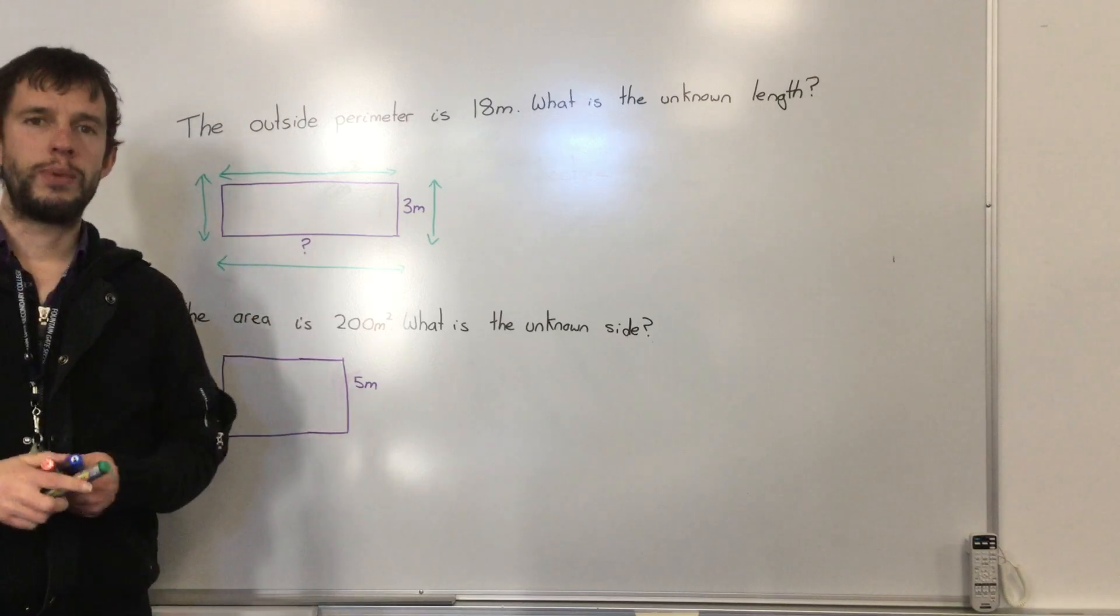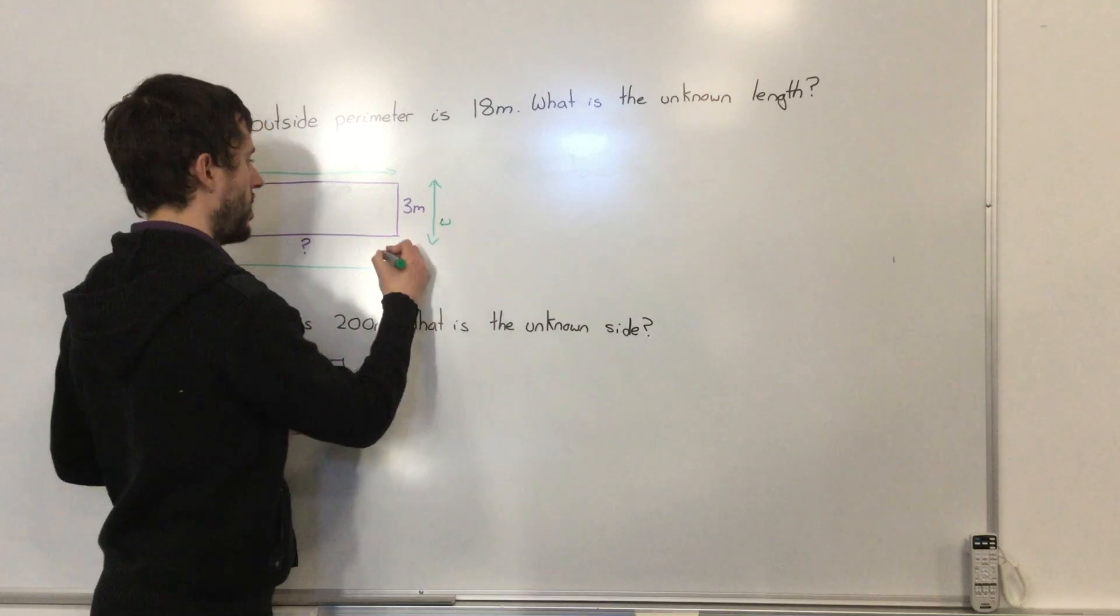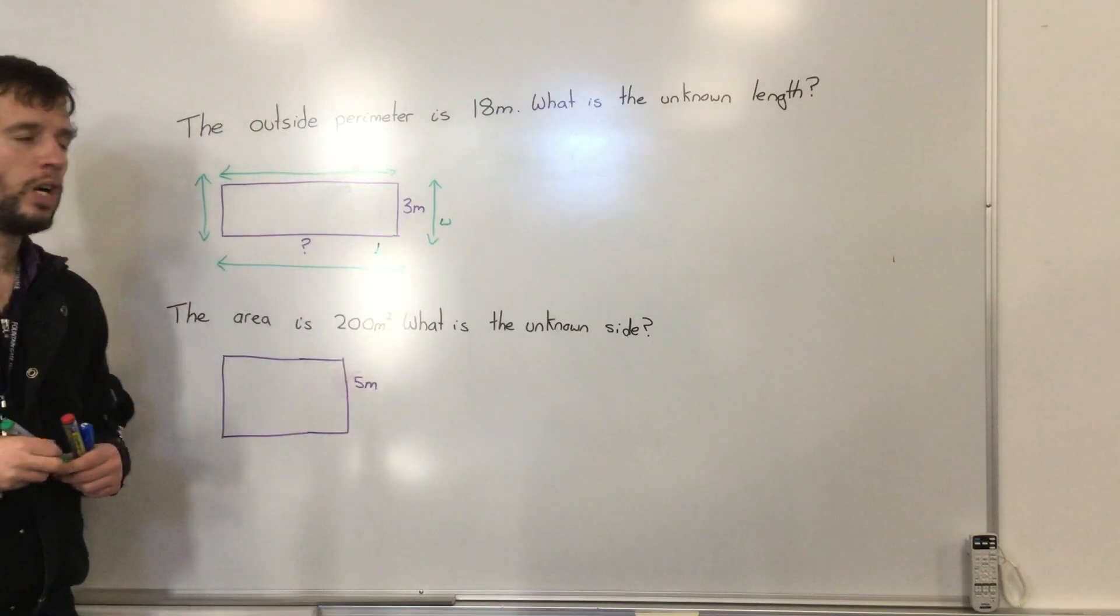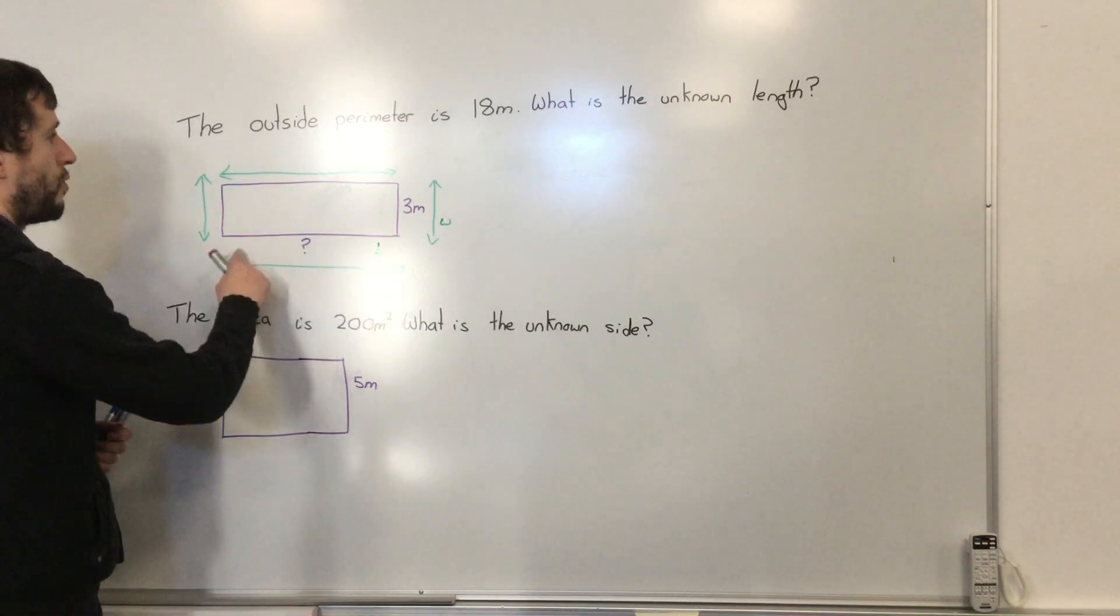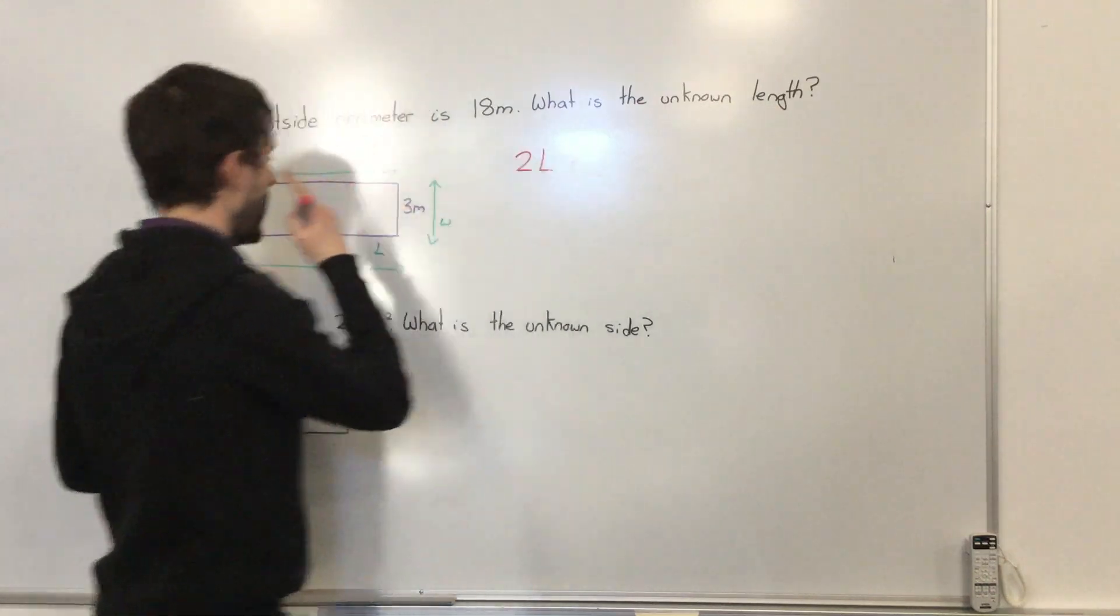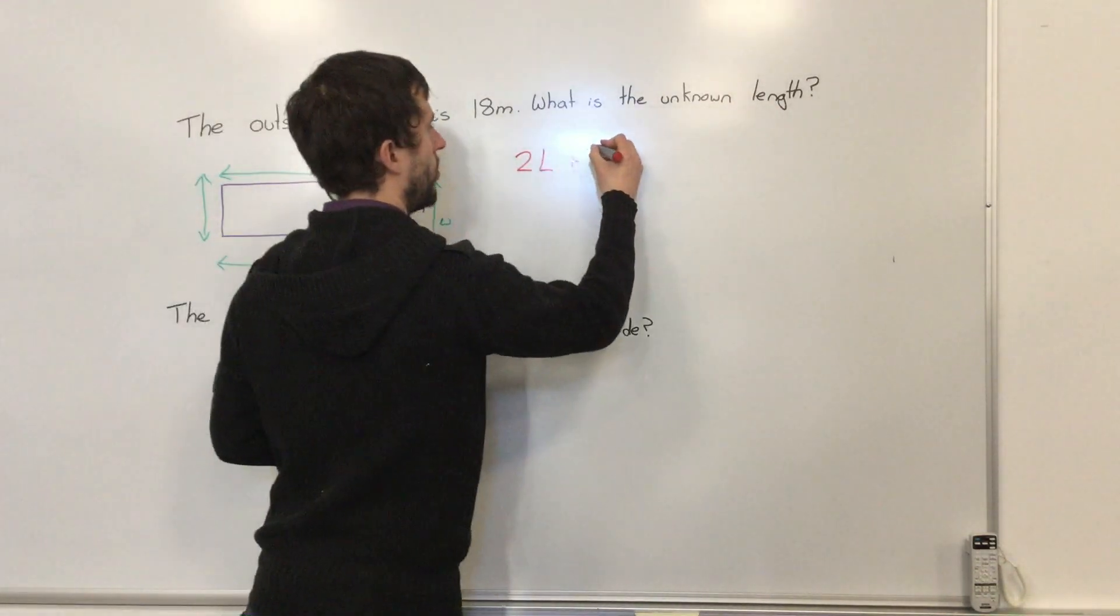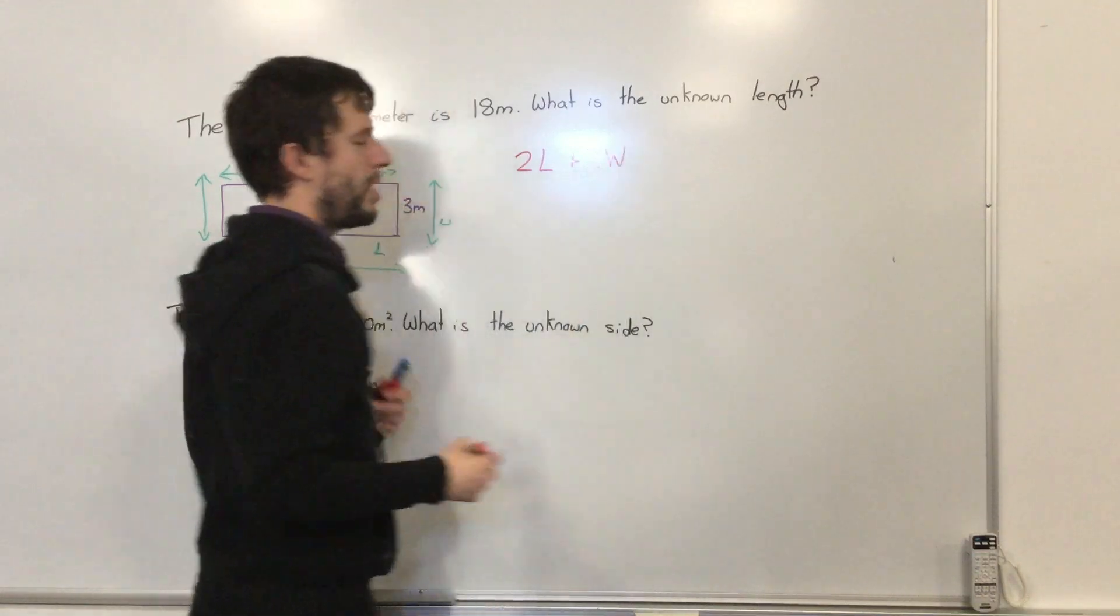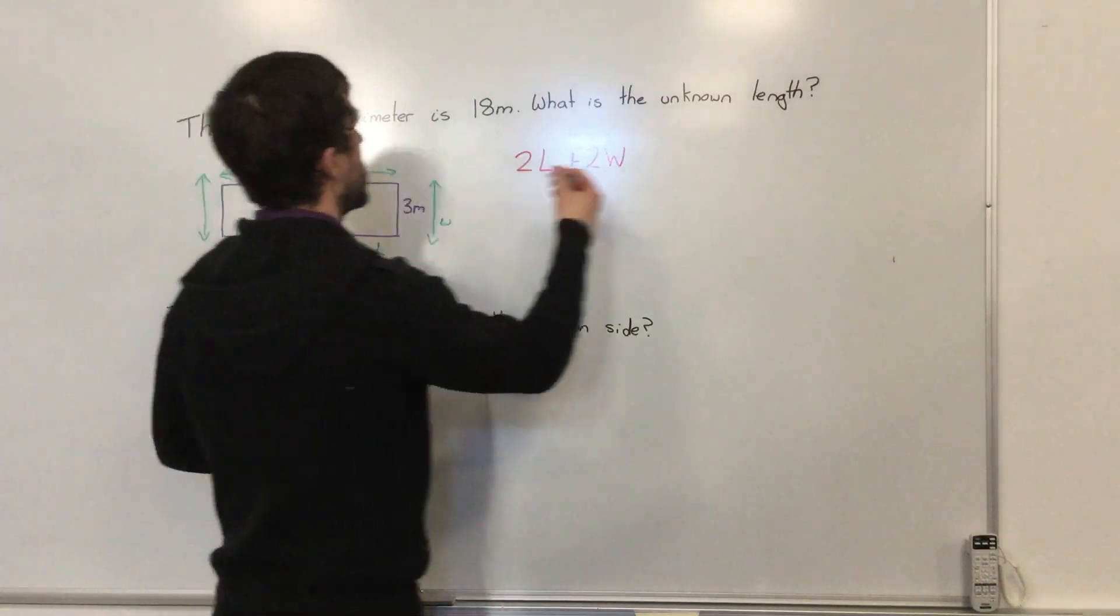So the first thing I'm going to be thinking about is this is width and this is length. If I'm using algebra, I'm just going to say we have two lots of L's, two lots of length, and I'm adding two of my width. I'm going to answer this in two ways. Now I know that it equals 18.